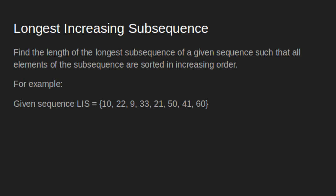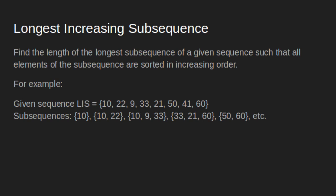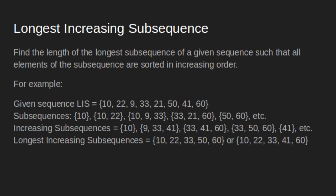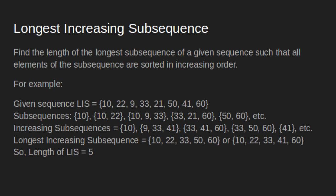Let us take an example. For the given sequence, these are some of the possible subsequences — a single element is also a subsequence, e.g., 10. These are some of the possible increasing subsequences — a single element is also an increasing subsequence, e.g., 10 and 41. For the given example, the two longest increasing subsequences are 10, 22, 33, 50, 60 and 10, 22, 33, 41, 60. So our algorithm should return the length of LIS as 5.